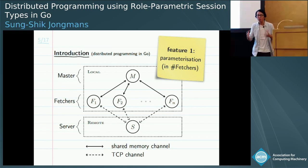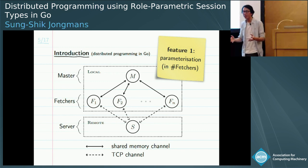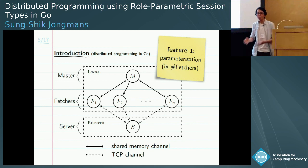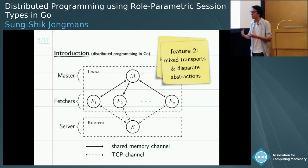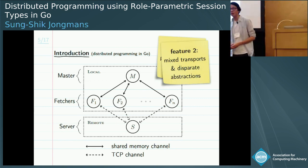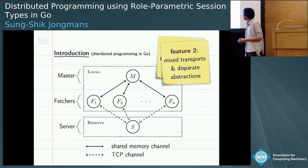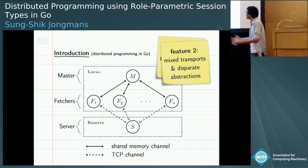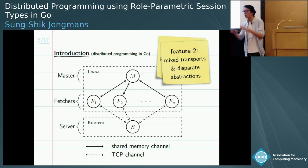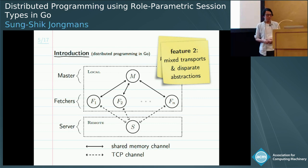The master and the fetchers run locally on your own machine, but the server runs remotely. This means the master and fetchers can communicate using native channels across shared memory, whereas the fetchers and the server need to communicate across a network using TCP. This brings us to the second core feature: as a programmer you need to deal with mixed communication transports — shared memory on one hand, TCP on the other. This is problematic because the way to access these different transports is through disparate programming abstractions, so you cannot reason about the communication protocol in a uniform vocabulary.